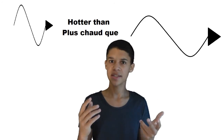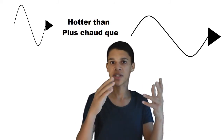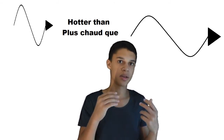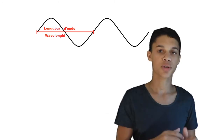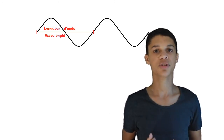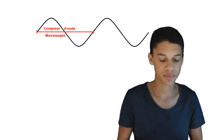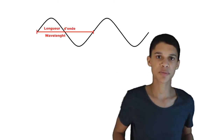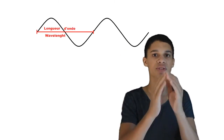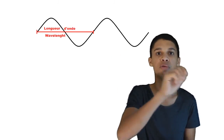The hotter a star is, the smaller the wavelengths of the radiations this star emits are going to be. The wavelength is the smallest distance between two identical points in a radiation — or in other words, it's basically the shortest distance that repeats indefinitely in a wave.